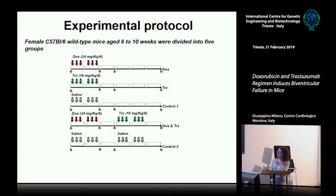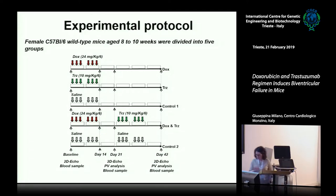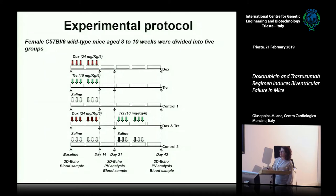Group 5 mice were treated with saline injections simulating the Doxorubicine and Trastuzumab groups. Measurements were performed at baseline, at the end of treatment on day 14, one week after the end of treatment on day 21, and four weeks after the end of treatment on day 42.